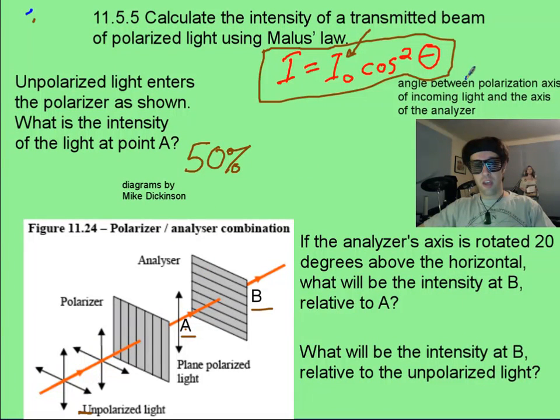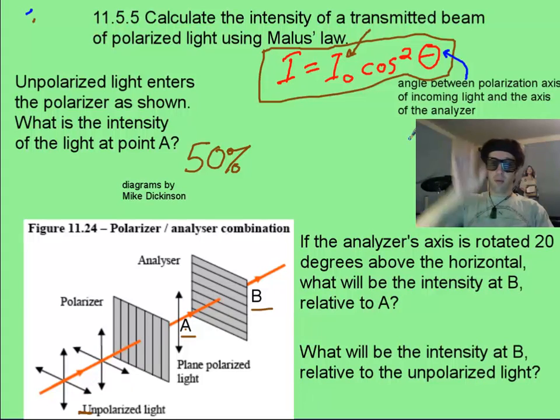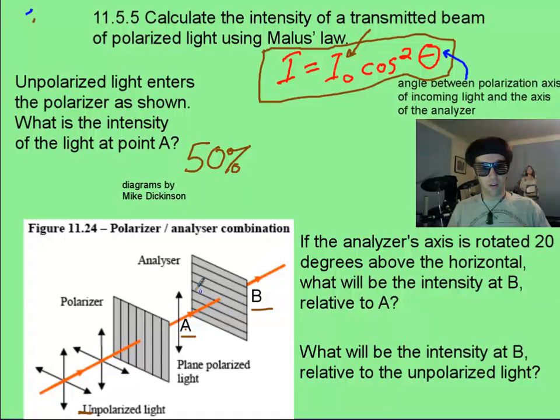It's important to know that this angle here, theta, is between the incoming polarized light, which is vertical, and the analyzer and what its axis is. In the picture down here, it would be 90 degrees, and you'd have none getting through. But in this case, we're saying that this is twisted, so that's 20 degrees above the horizontal.